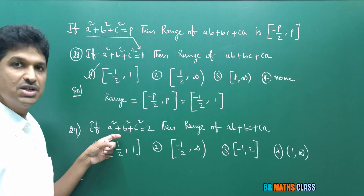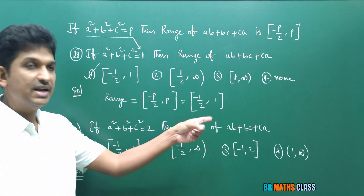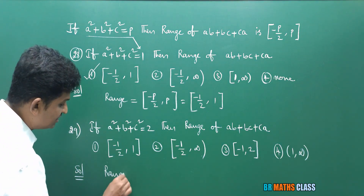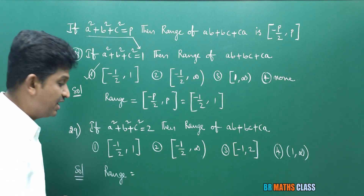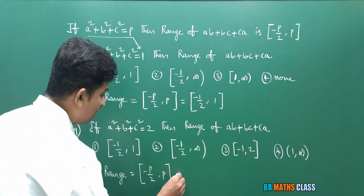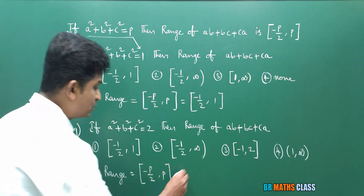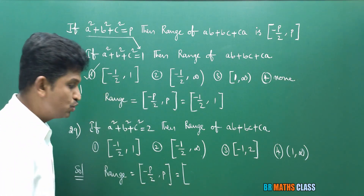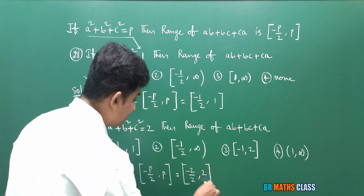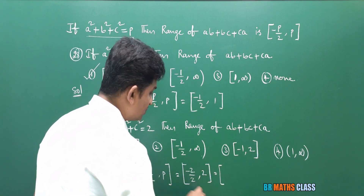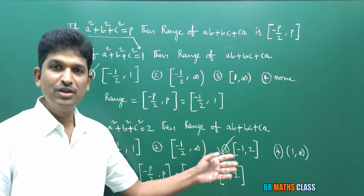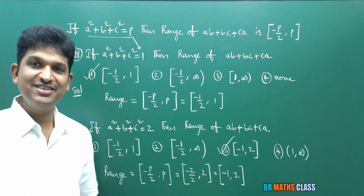Similarly, question 29: if A² + B² + C² = 2, find the range of AB + BC + CA. Using the formula with P = 2: range = [−2/2, 2] = [−1, 2]. So the closed interval [−1, 2] is the answer — the third option is correct. How easy it is to do these two problems if you know this statement!